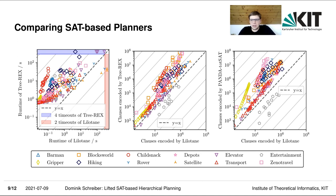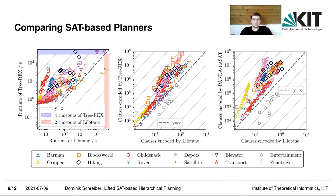There is also one domain, namely entertainment, where our approach does not work well relative to the previous approaches. For this domain, it is highly beneficial to ground it — you gain a lot of information on which operations can be pruned, which is information Lilutane does not have immediate access to. But overall, these results are very positive.